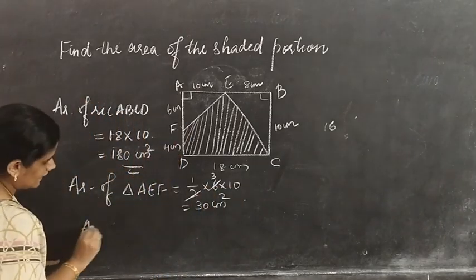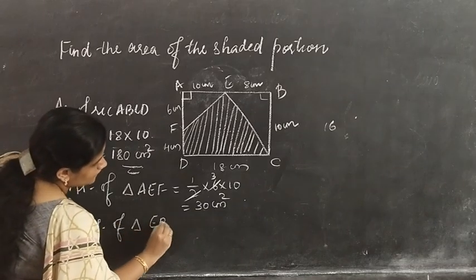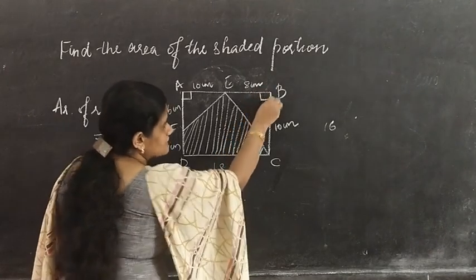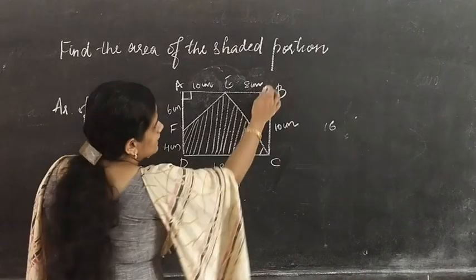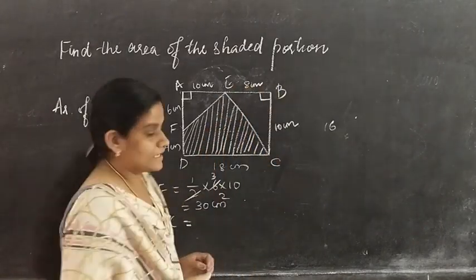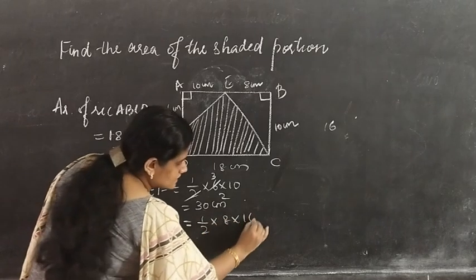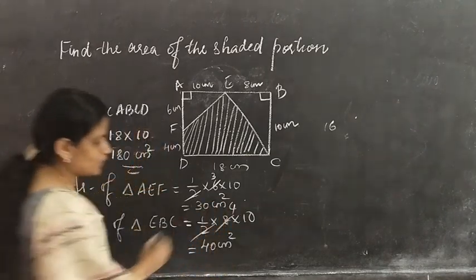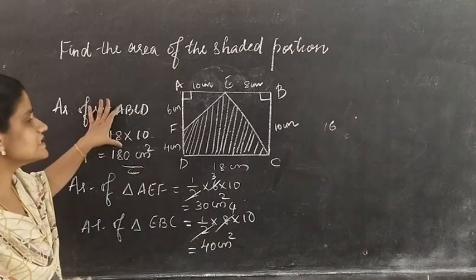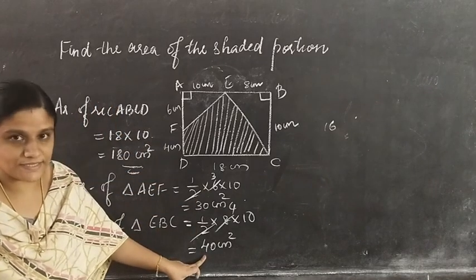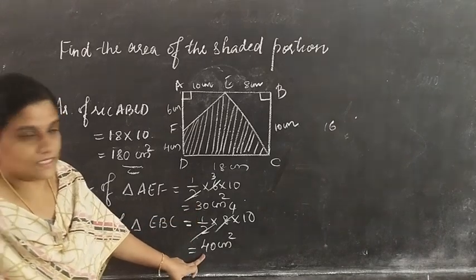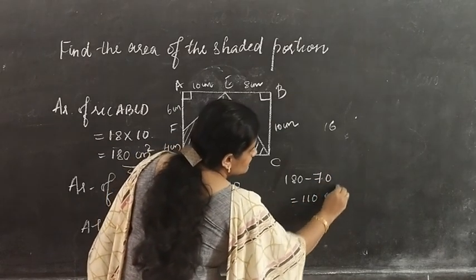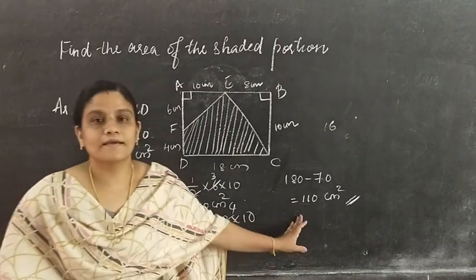Now for the next triangle: area of triangle EBC, the same way, half into base into height. Here the angle is 90 degrees, so we take base as 8 and height as 10. That is half into 8 into 10, giving 40 cm square. So area of shaded portion equals 180 minus 30 plus 40, that is 180 minus 70, which gives 110 cm square.